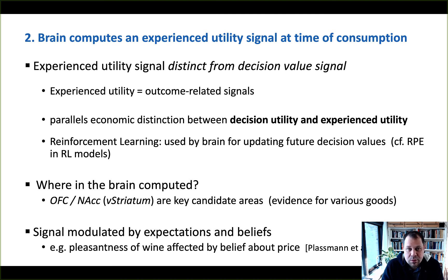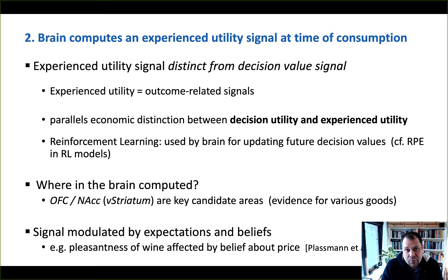That's a distinction commonly made in the field of economics. To reiterate — we've talked about this before in the context of reinforcement learning — when the brain uses outcome information-related signals to experience utility, to make updating, to predict future decisions, or to update the value of an item to improve future decisions, we talk about where in the brain this is computed. Key areas are the orbitofrontal cortex and the striatum.